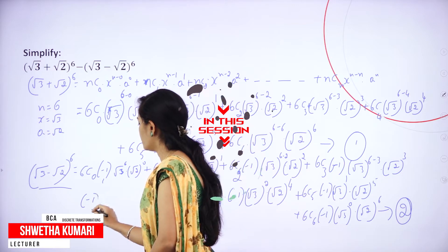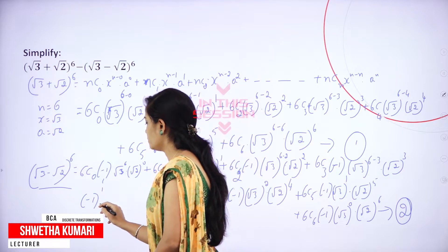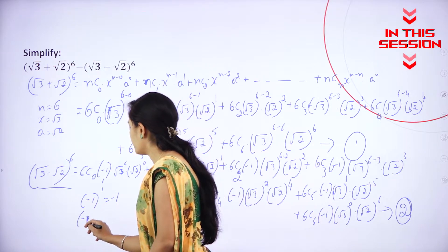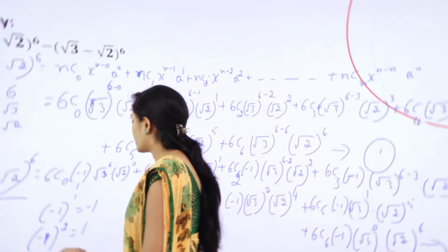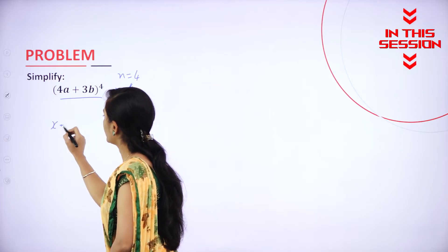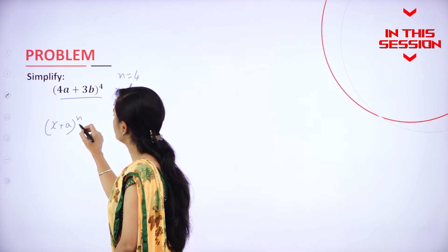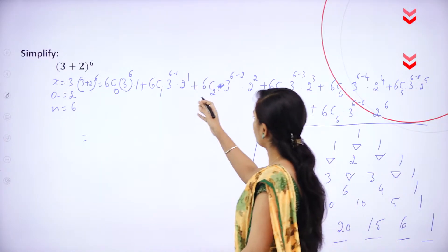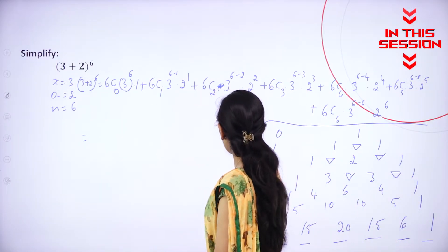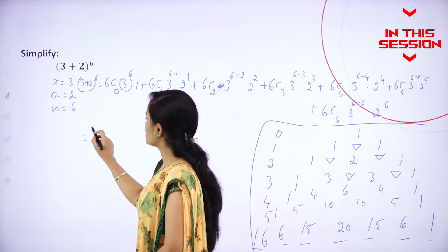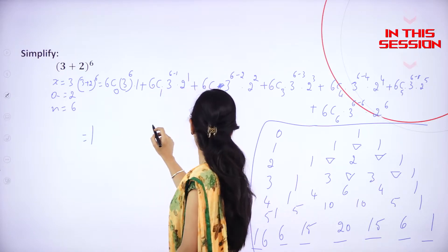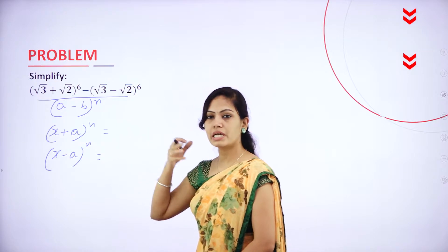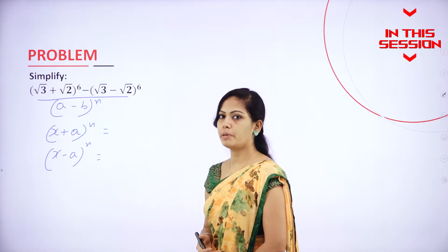If it is minus 1 power 1 it is minus 1, and if it is minus 1 power 2 it is 1. So now I will write the formula: x plus a whole power n is equal to nc0. So now we have 7 terms so you can substitute the value of 6c0. 6c0 is 1. 6c1 is — if it is x plus a power n, as it is, we can easily apply the binomial expansion.